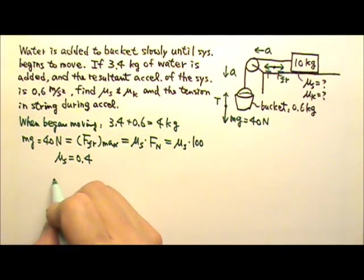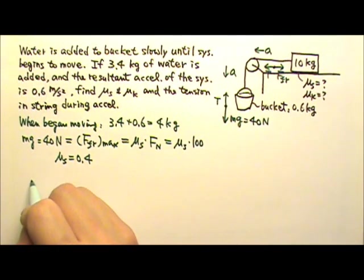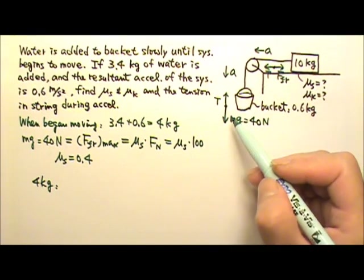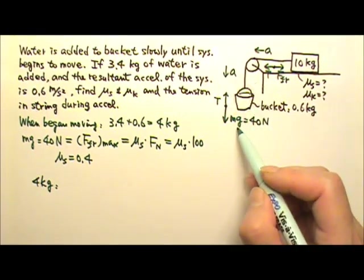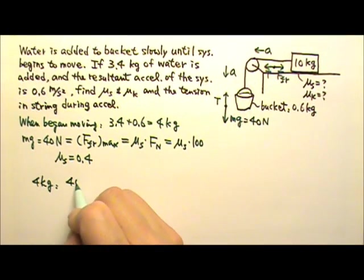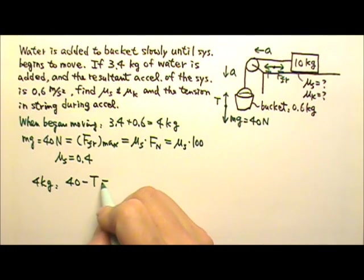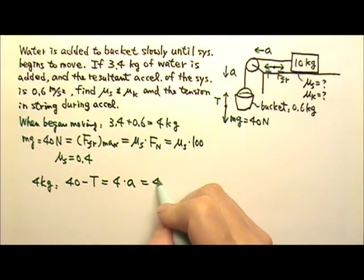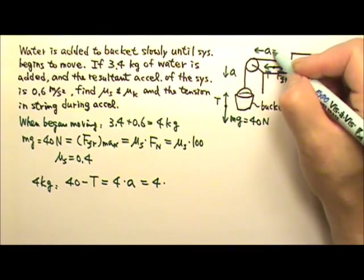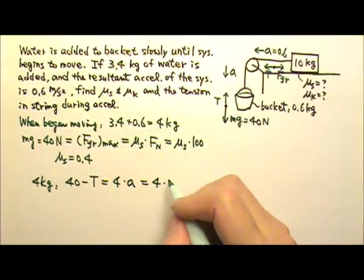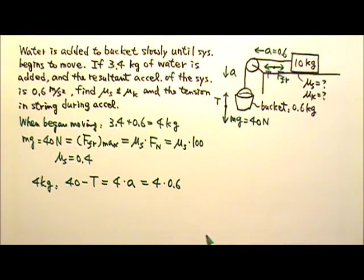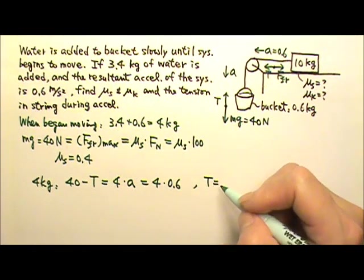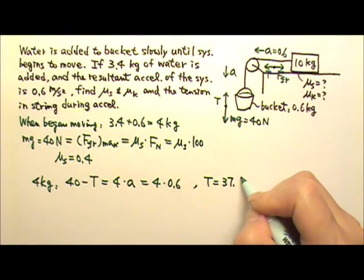So when we write the force equation for the 4 kg, the downward acceleration means the downward force is bigger. So it's 40 minus T equals MA. And we already know the acceleration is 0.6. So this gives us the tension in the string. That's 37.6 N.